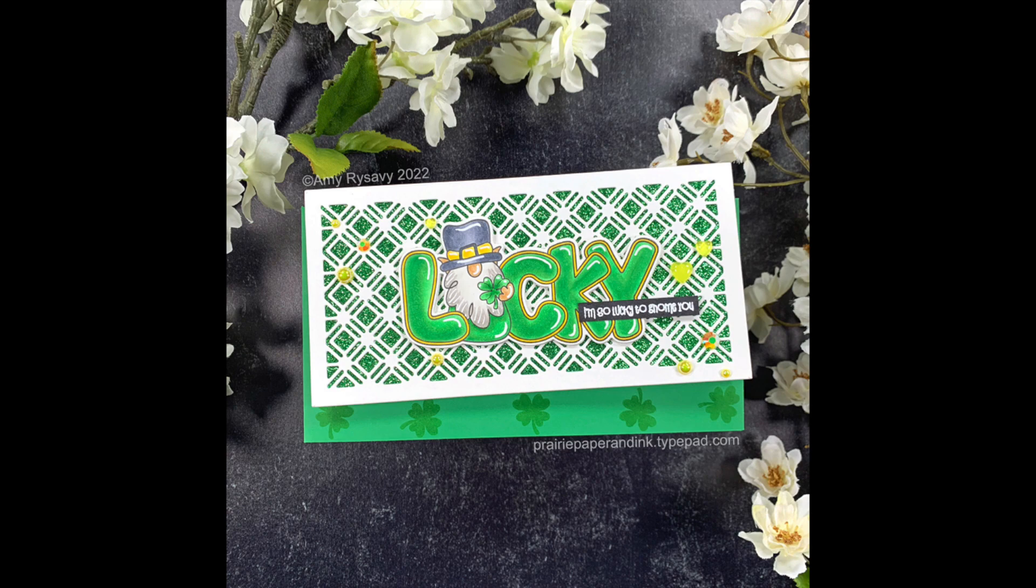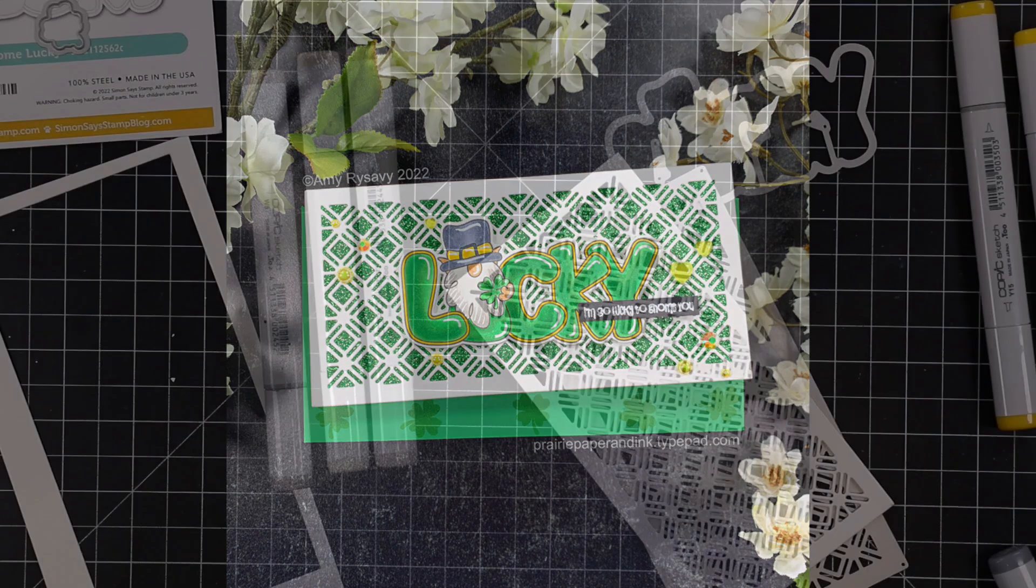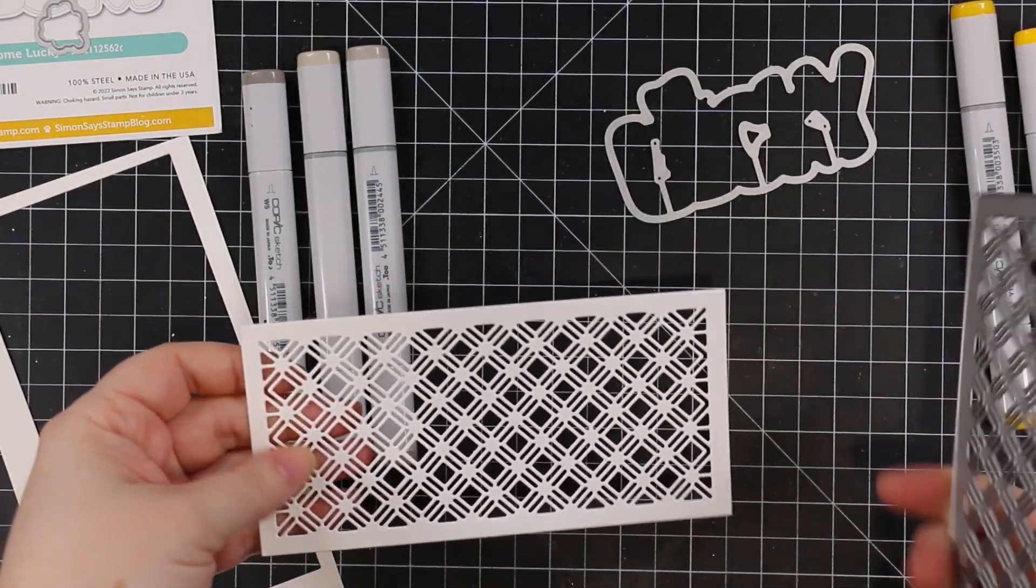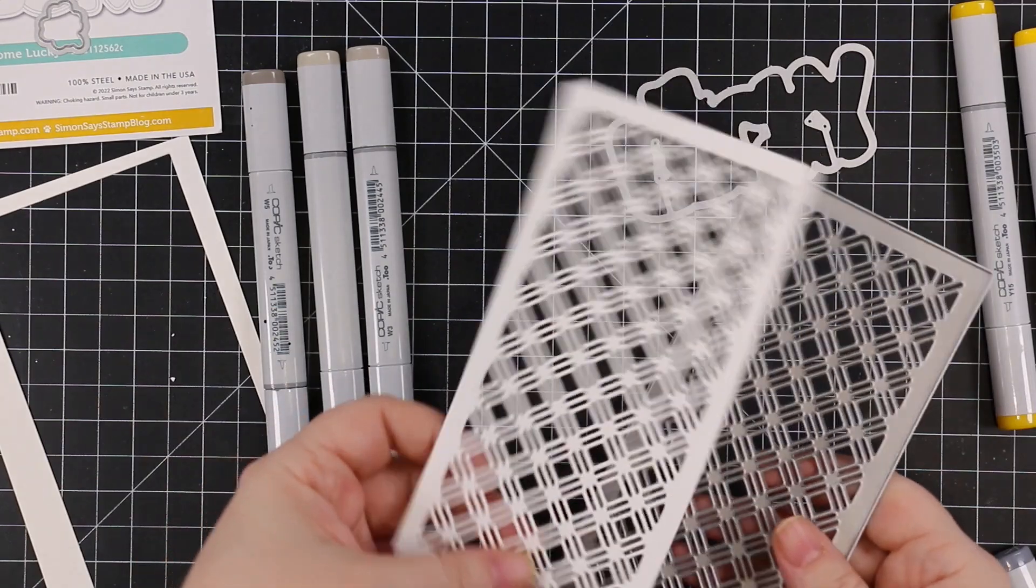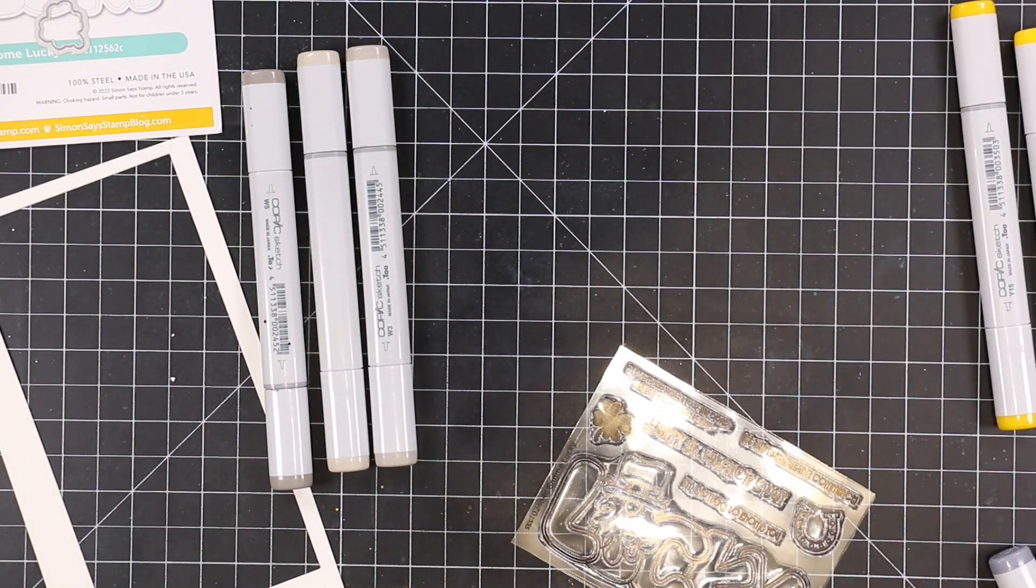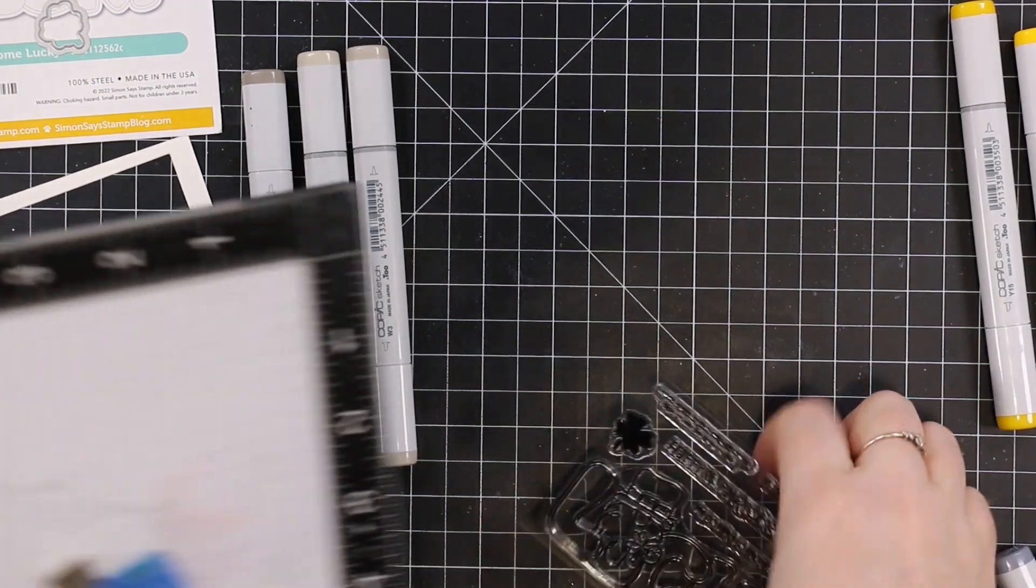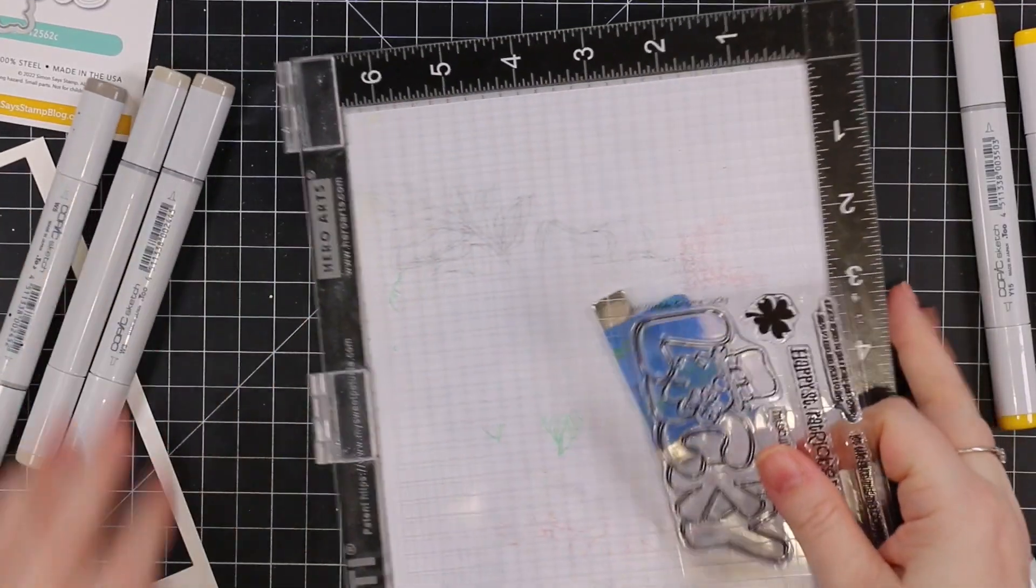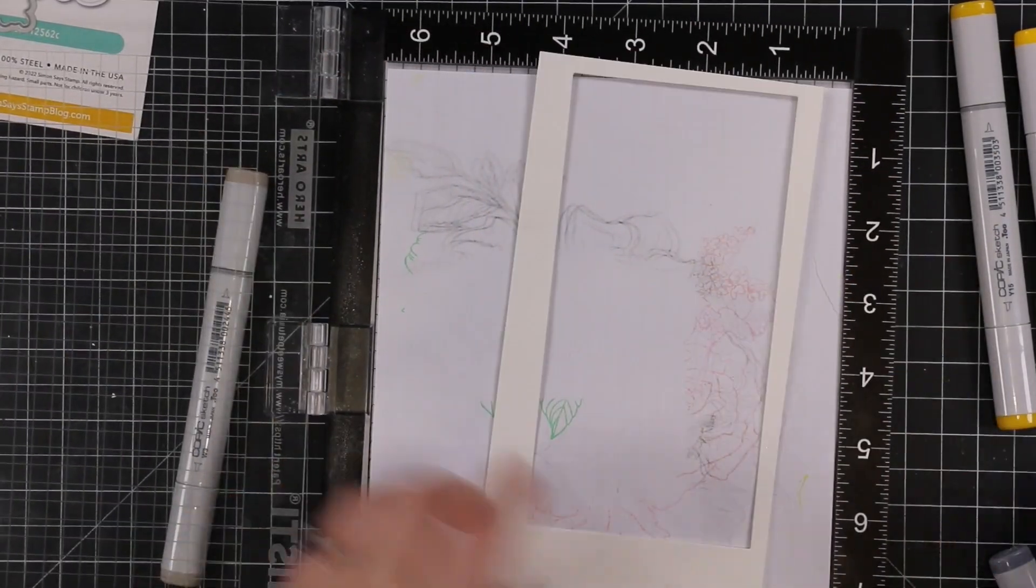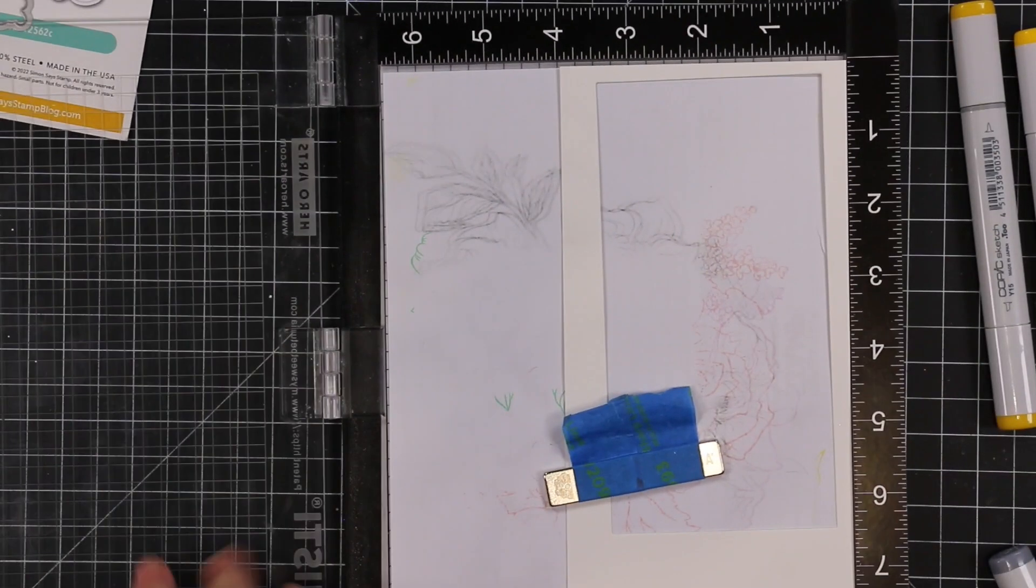Hello friends, Amy R here with Prairie Paper and Ink with a quick and easy card. I started off with this mini slimline lattice wafer die and die cut some white cardstock. There was enough space left on that piece of cardstock to stamp my main image.